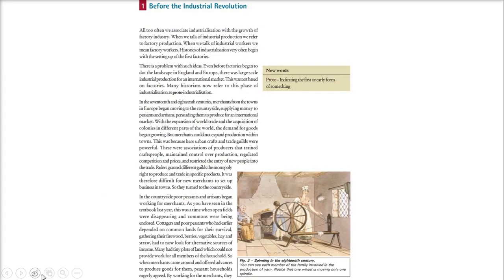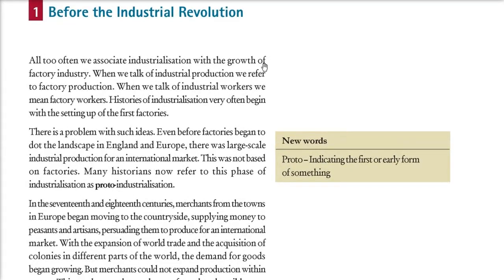Before the industrial revolution, people think that factories were established and various industries came up — that is how the industrial revolution took place. But before this, things were already going on. This is called proto-industrialization: large-scale industrial production for an international market which was not based on factories. There were no factories, but there was still production, and it was controlled by merchants.